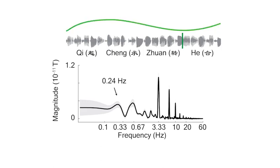And we found another component, which is around 0.24 Hz. This frequency component aligns with the conceptual organization of the poem Jue Ju, which is qi chen zhuan he.